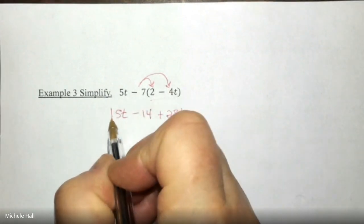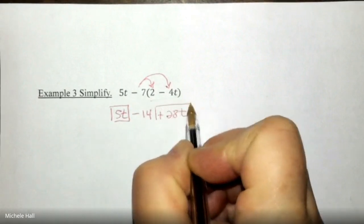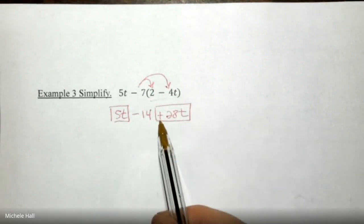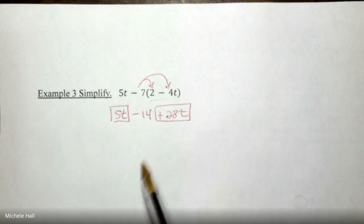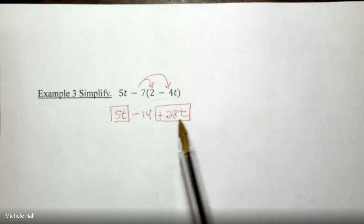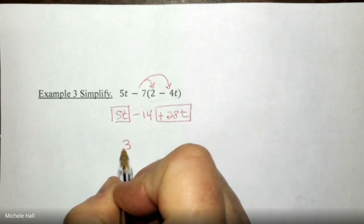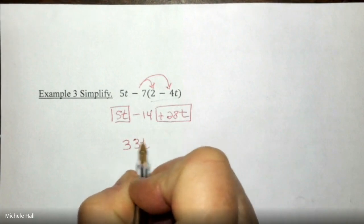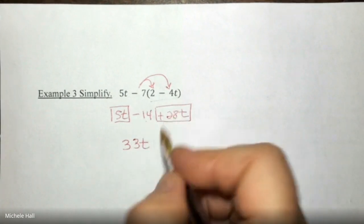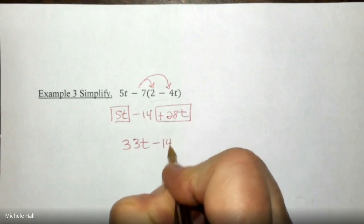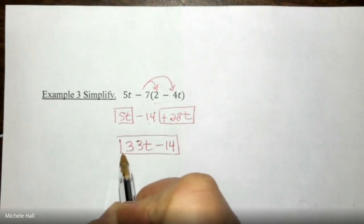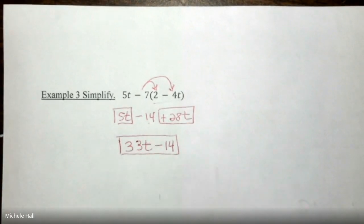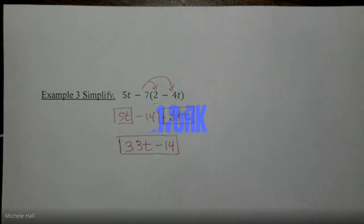Gotten rid of the parentheses and now I need to see if I have any like terms that I can combine. I see 5t and a positive 28t. Notice how I always put my sign inside the box or the circle to keep my sign with the term. 5t plus 28t is going to be 33t and then I still have a minus 14. The constant goes at the end. I cannot combine and add and subtract variables with constants. Final answer 33t minus 14.